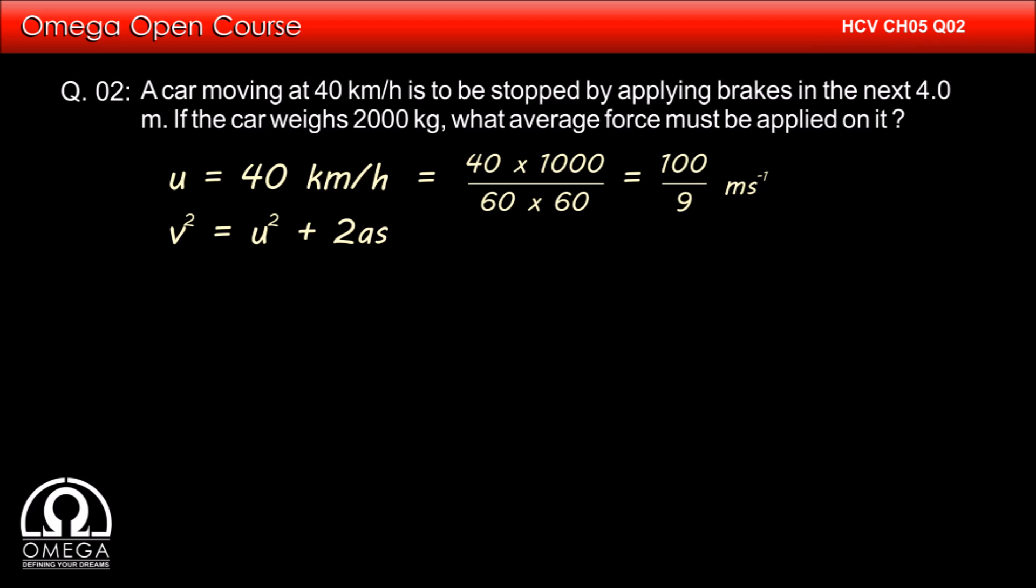Also, as per the question, displacement is 4 meters. Putting the values, we get 0 equals 100 by 9 whole squared plus 2as.